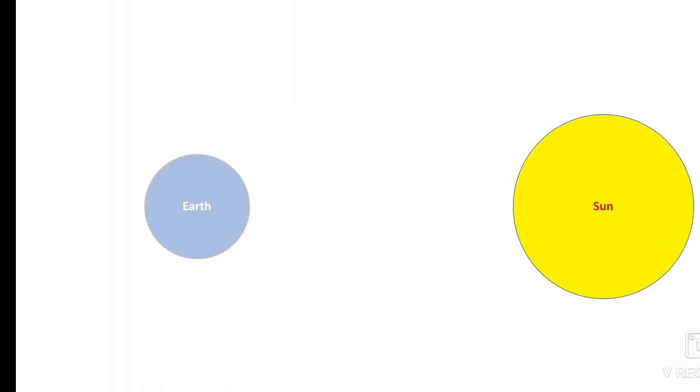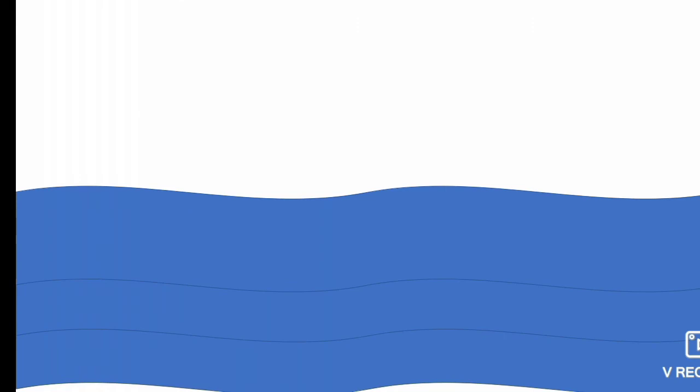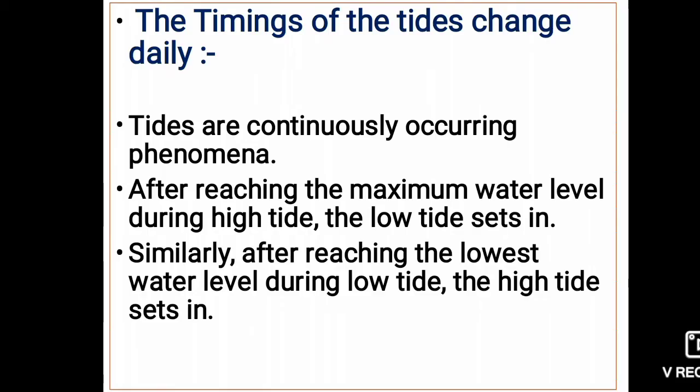Hello friends. As we saw in the first part of this video, when tides are created, some factors are responsible: the gravitational pull of the moon, Earth, and sun; the revolution of the Earth around the sun and indirectly the revolution of the moon around the sun; and the centrifugal force. We saw how the effect of the sun and moon's gravitational force and Earth's centrifugal force creates high tides and low tides.